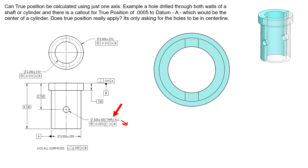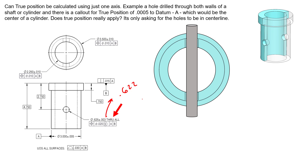If you know about size dimensions, you know that Rule Number One applies by default in ASME Y14.5. Rule Number One states we can't deviate beyond an envelope of perfect form at MMC. The MMC of our feature is 0.625 ± 0.003, so MMC is 0.622 and LMC is 0.628. We can simulate that envelope using a pin gauge — a pin measuring 0.622 in diameter simulates a relatively perfect envelope.